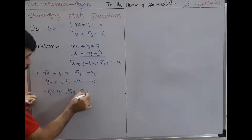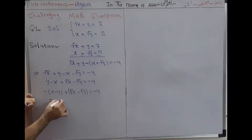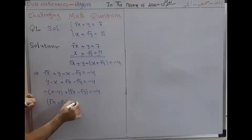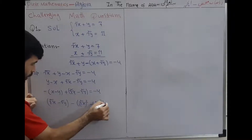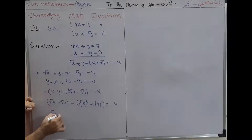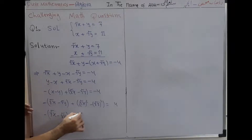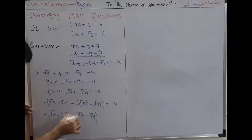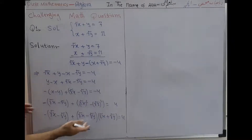Taking minus sign as a common factor: x minus y plus square root of x minus square root of y is equal to minus 4. We can write this as square root of x minus square root of y, minus the quantity square root of x squared minus square root of y squared, is equal to minus 4.